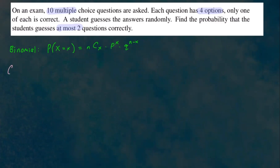For this problem, we're given 10 multiple choice questions, so n equals 10. Little p represents answering a question correctly. There are four options and only one correct, so p equals one fourth. Then q — not answering it correctly — is the complement: one minus one fourth, which gives us three fourths.